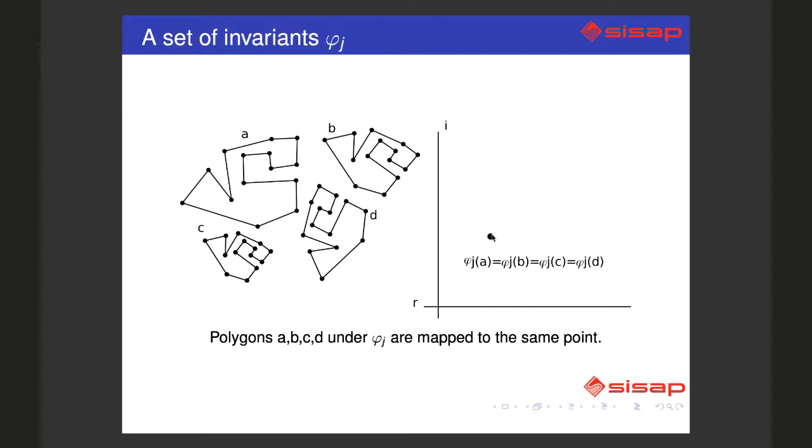If we apply phi here, we will obtain exactly the same point. That is, we can identify the polygons in any position and at any scale and anywhere in the plane.